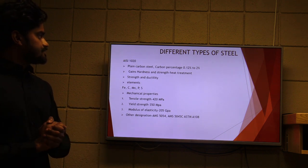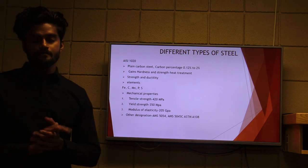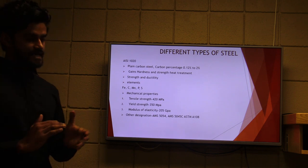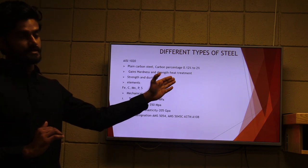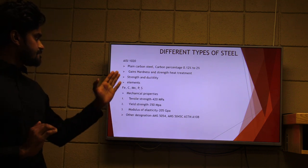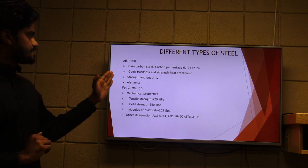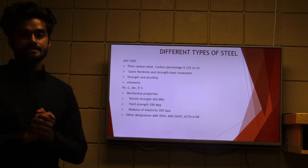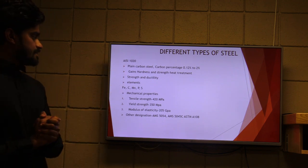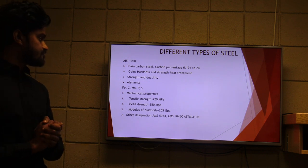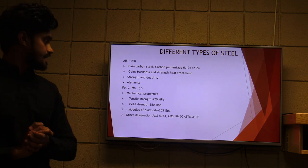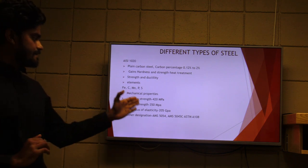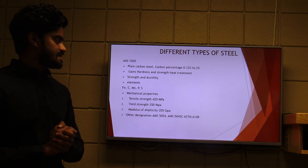AISI 1020 is another plain carbon steel. The carbon percentage ranges between 0.12% to 0.20%. It gains hardness and strength through heat treatment. Its chemical composition consists of iron, carbon, manganese, phosphorus, and sulphur. Key characteristics are good strength and ductility. Mechanical properties include a tensile strength of 420 MPa, yield strength of 350 MPa, and modulus of elasticity of 205 GPa. Other designations are AMS 5054, AMS 5045C, and ASTM A108.